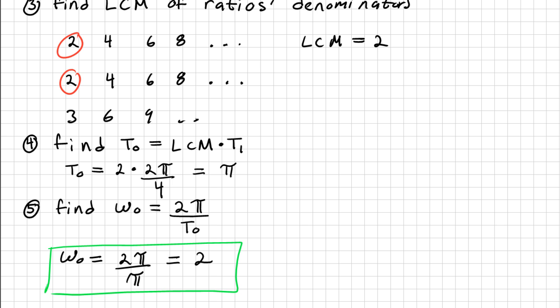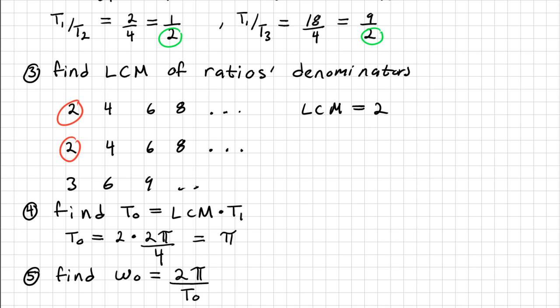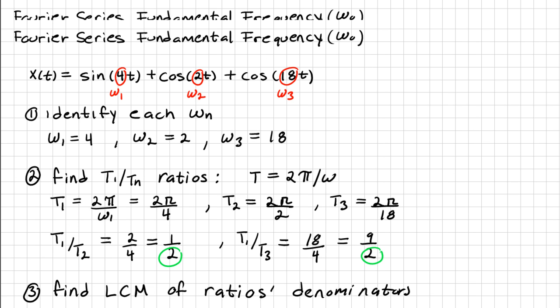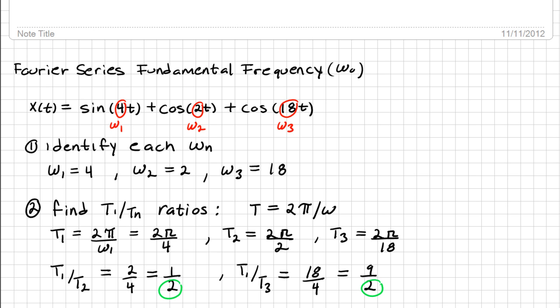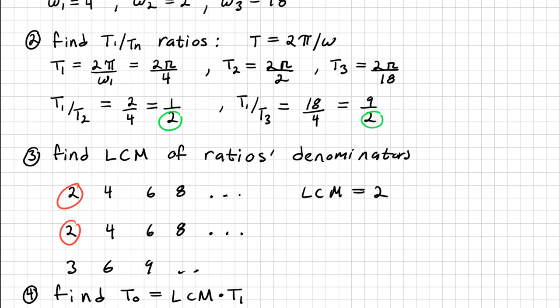Now in this problem, the number 2 came out a lot. But don't let that mislead you into thinking that all these numbers should always match. It always really depends on how you name these. Like I said, we could have named the 18 ω₁ and the 2 ω₃ and number 4 ω₂.